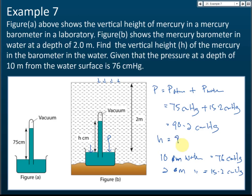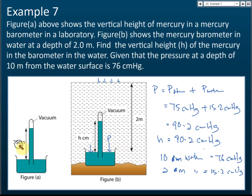The pressure caused by the water is 15.2 cm mercury. Therefore the total pressure is 75 + 15.2 = 90.2 cm mercury, and the height of the mercury column h equals 90.2 cm. This is a challenging question — many students struggle with it. The key idea is: when a barometer is placed in water, the pressure acting on it is the atmospheric pressure plus the liquid pressure, giving a taller mercury column.